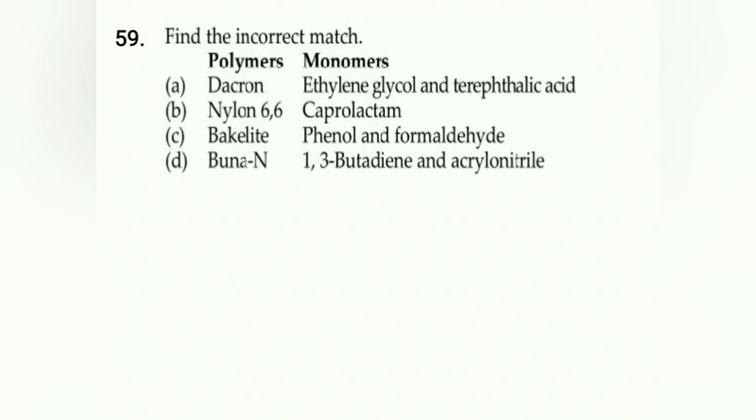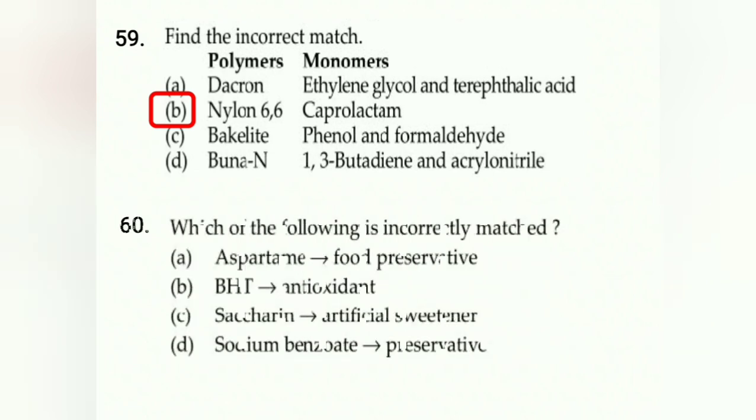Fifty-seventh: CH3CHBrCH3 with alcoholic KOH gives propene (A), then HBr with peroxide gives CH3CH2CH2Br (B), then CH3ONa gives ether 1-methoxypropane (C), answer B. Fifty-eighth: not a function of proteins - nail formation, skin formation, muscle formation are correct, but providing energy is carbohydrates' function, answer D. Fifty-ninth: incorrect match - Dacron is ethylene glycol and terephthalic acid correct, but caprolactam is nylon-6, while nylon-6,6 is hexamethylene diamine and adipic acid, answer B. Sixtieth: incorrectly matched - aspartame is artificial sweetener not food preservative, answer A.